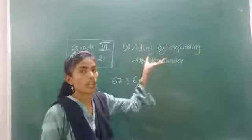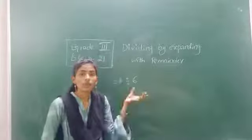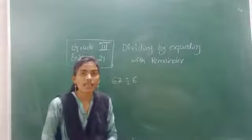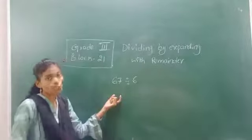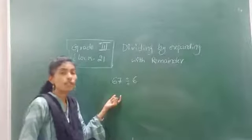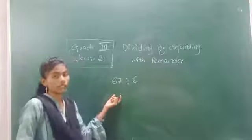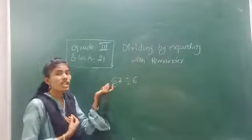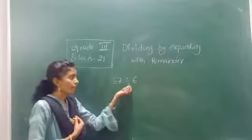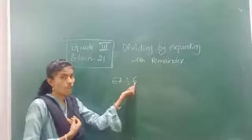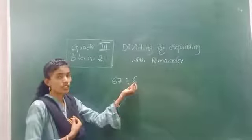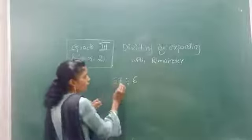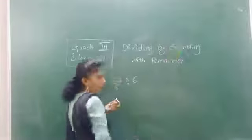Dividing by expanding. Yesterday we saw how to divide numbers using the expansion form. What do you do in the expanding method, children? We have to expand the dividend. What is the dividend? The number which is being divided is called the dividend. So here, the number which is being divided — which number am I going to divide? 67 divided by 6. What am I dividing with? With 6. So this is called the divisor and this is called the dividend. We have to expand the dividend in the expansion method.